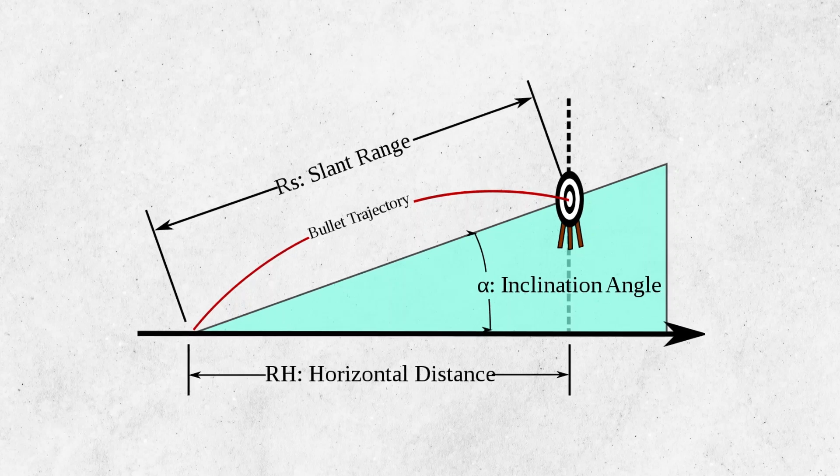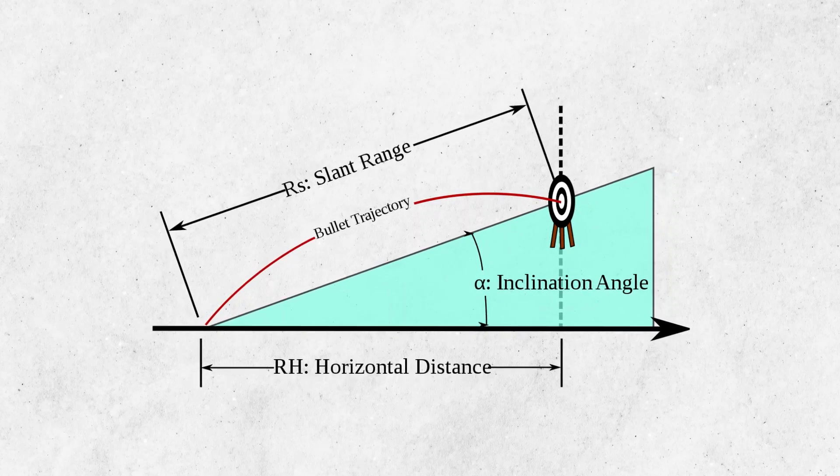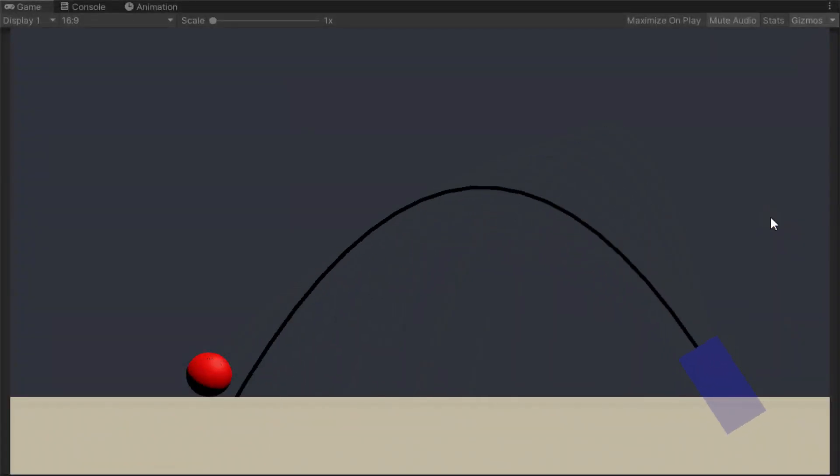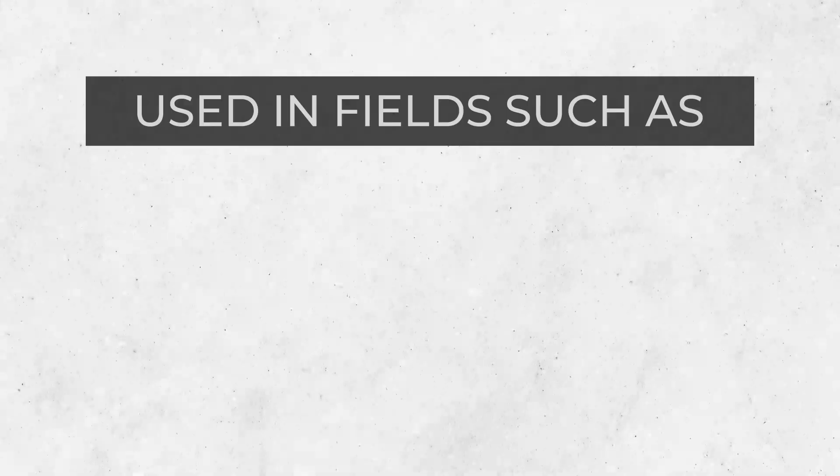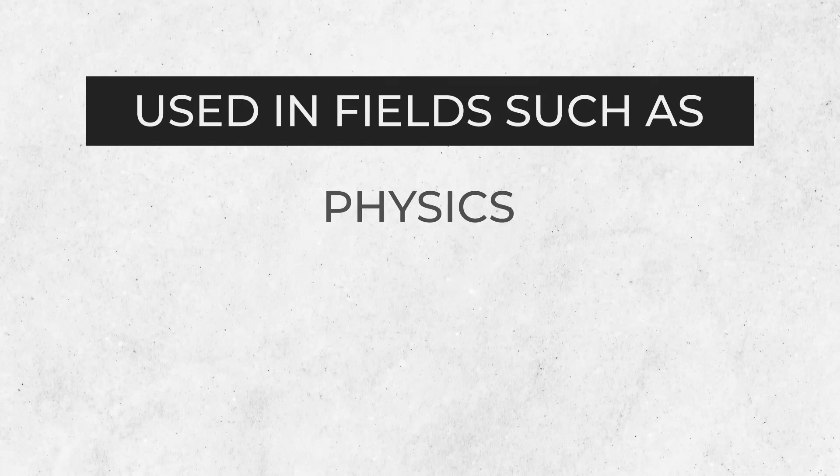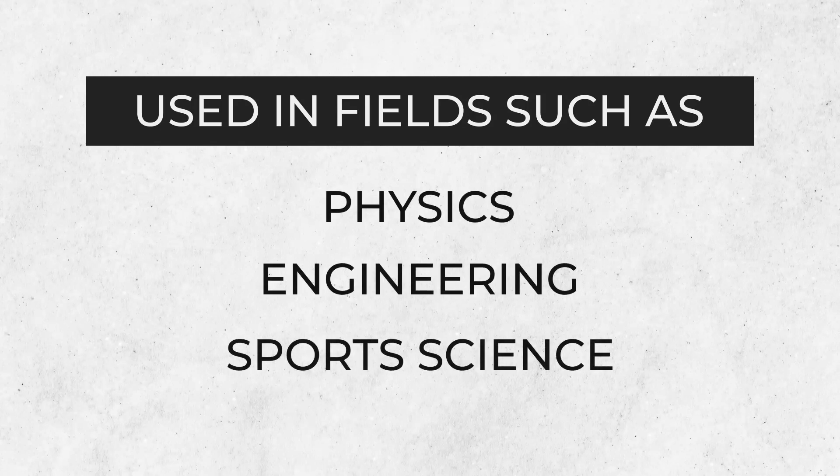The equation can be used to model the trajectory of an object in flight, allowing us to predict its path and estimate important parameters such as range, peak height, and time of flight. This equation is widely used in fields such as physics, engineering, and sports science.